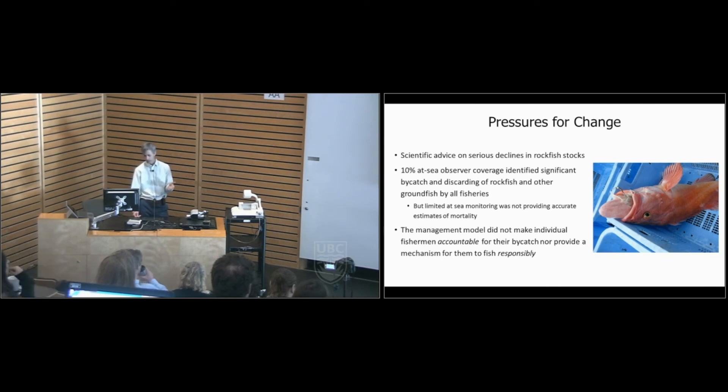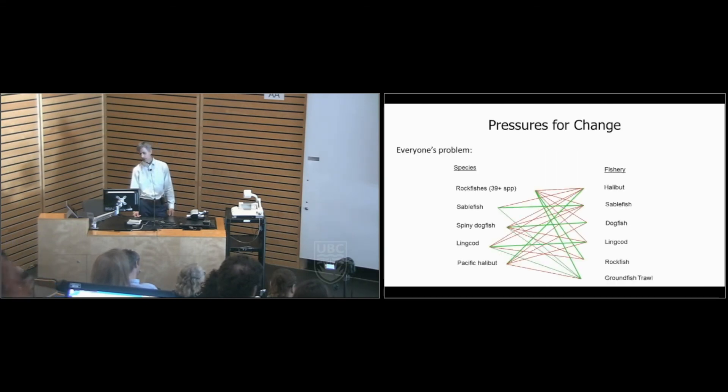So ultimately it didn't make these individual fishermen accountable for their catch of rockfish, which was often a bycatch to what they were aiming for, whether that's halibut or sablefish or lingcod or something else. And we didn't have any way to make them fish responsibly for it. This was everyone's problem. So on the left, you have all the species that could be caught, and on the right are the fisheries. Everybody's catching each other's fish. So you might be a halibut fisher with a halibut license, but the truth is you're out there fishing for halibut and you're catching rockfish, lingcod, etc.